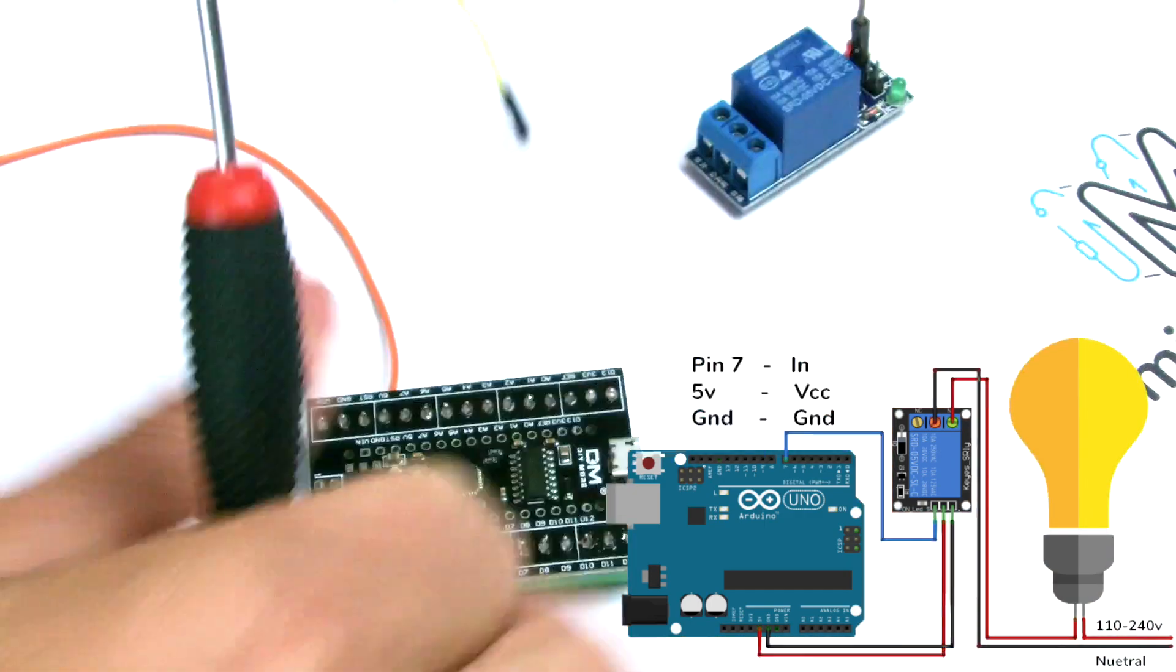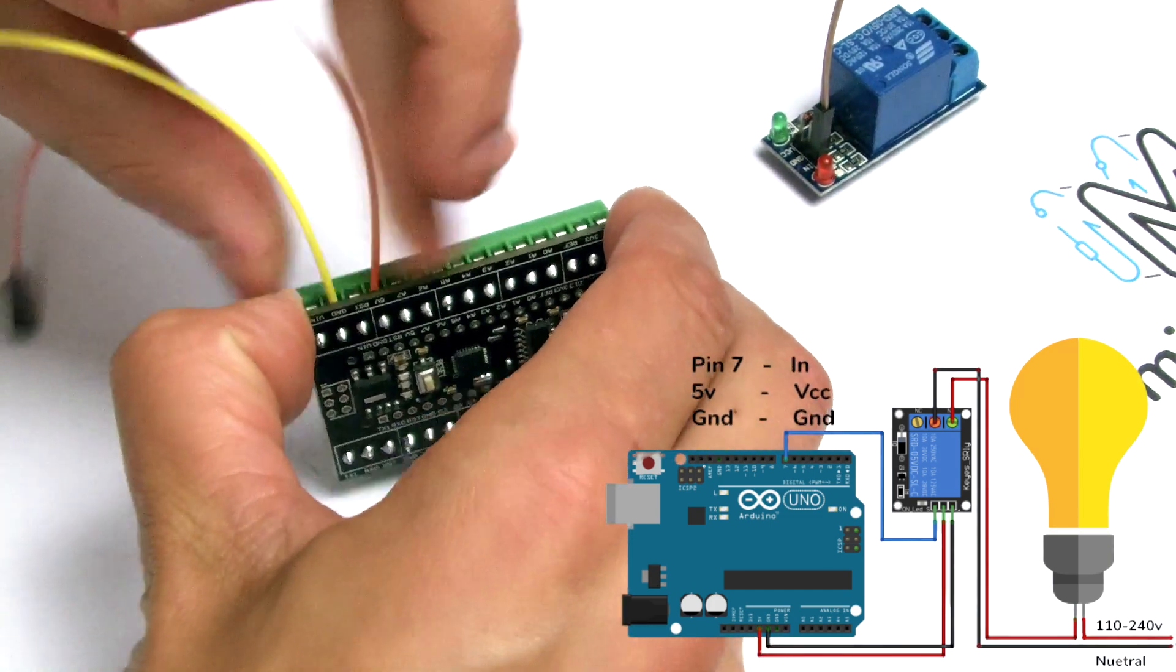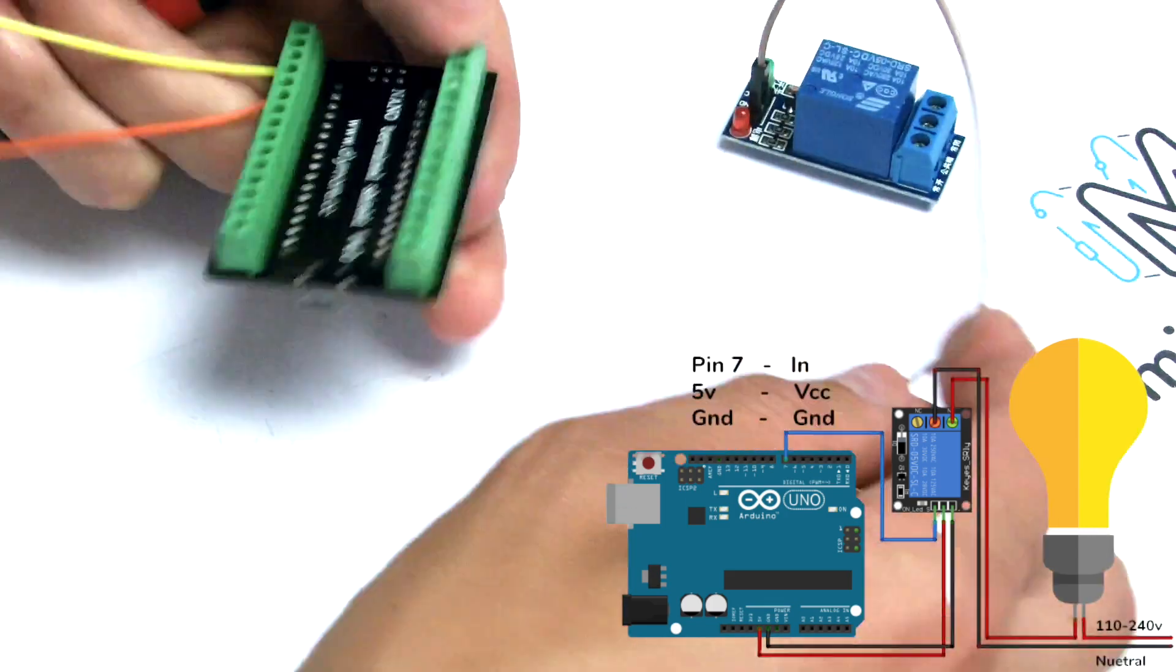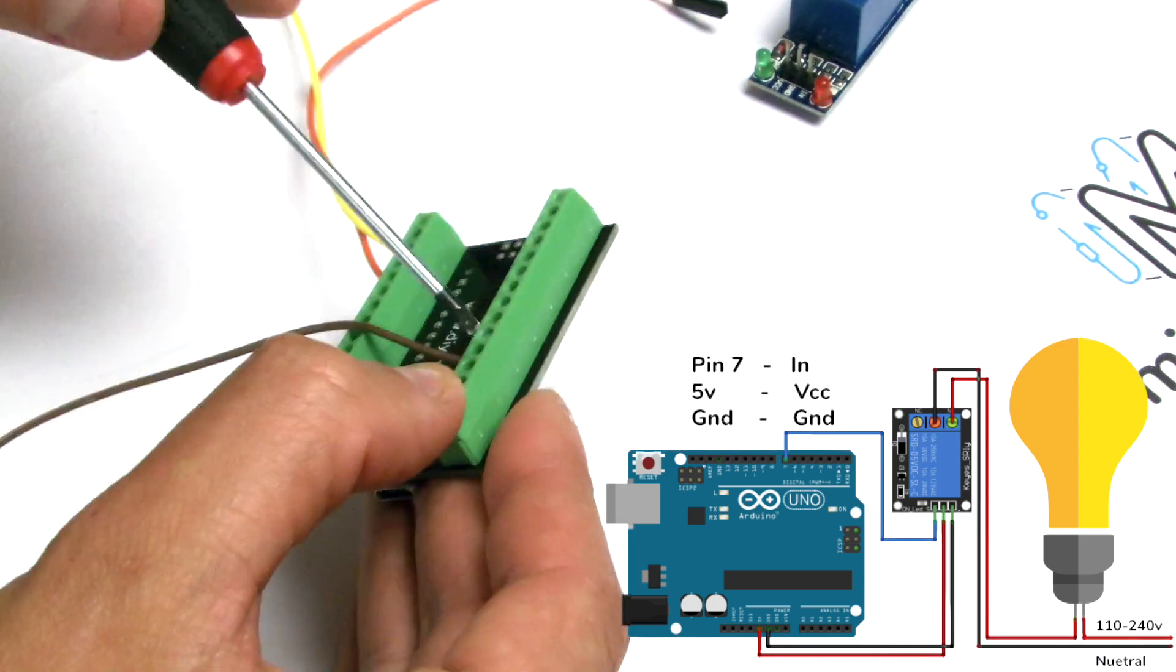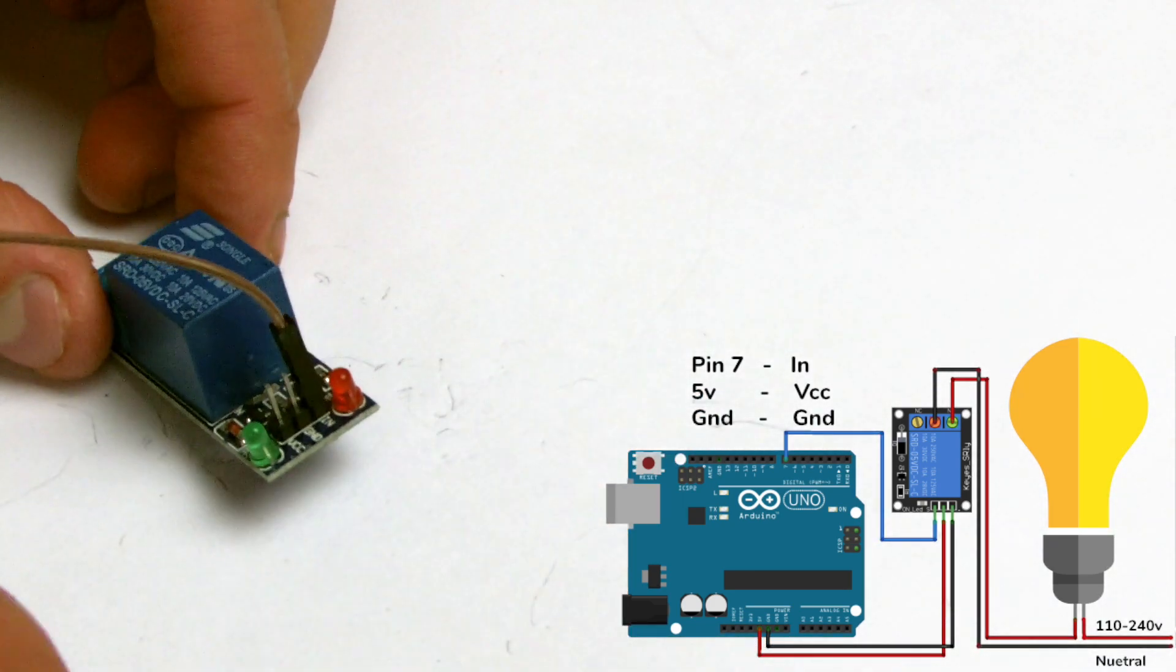Next, we connect the jumper cable from the ground pin on the Arduino Nano to the ground pin on the relay. Finally, a signal wire is added, so in my selection I'm using pin 7, which is going to connect to the input pin on the relay.